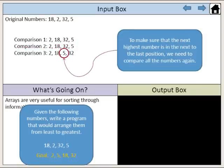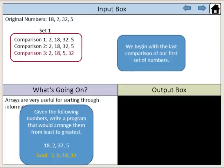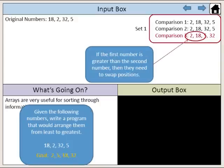To make sure that the next highest number is in the next to the last position, we need to compare all the numbers again. We begin with the last comparison of our first set of numbers. If the first number is greater than the second number, then they need to swap positions.